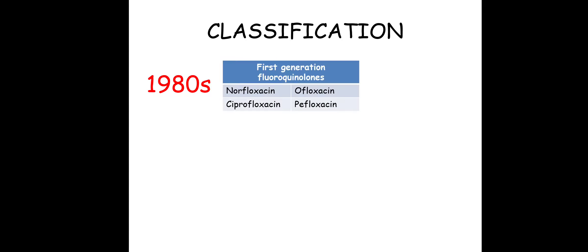Lastly, the classification of fluoroquinolones. When a fluorine moiety is added to quinolone, we get a fluoroquinolone, and this was done in the 1980s. This gave us the first generation of fluoroquinolones with just one fluorine group. Examples of first generation fluoroquinolones are norfloxacin, ciprofloxacin, ofloxacin, and pefloxacin.